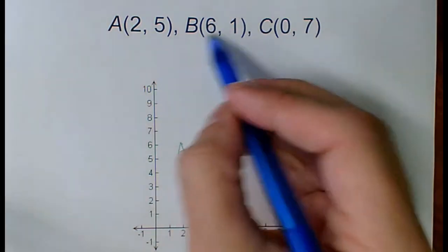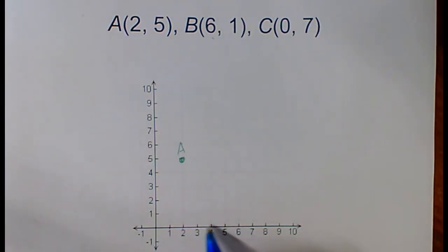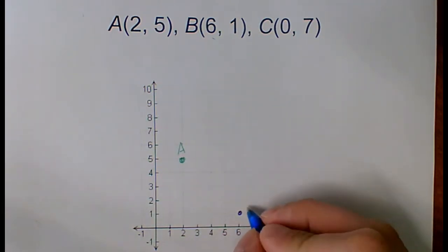B is six, one. So I'm going to go right one, two, three, four, five, six, because it's a positive X and go up one because it's a positive Y. Call it B.